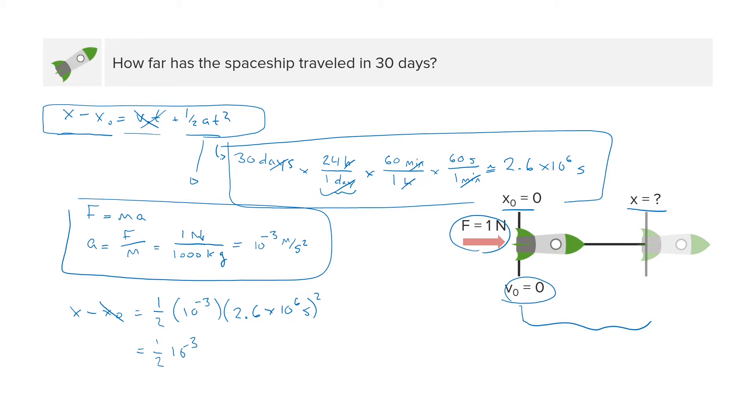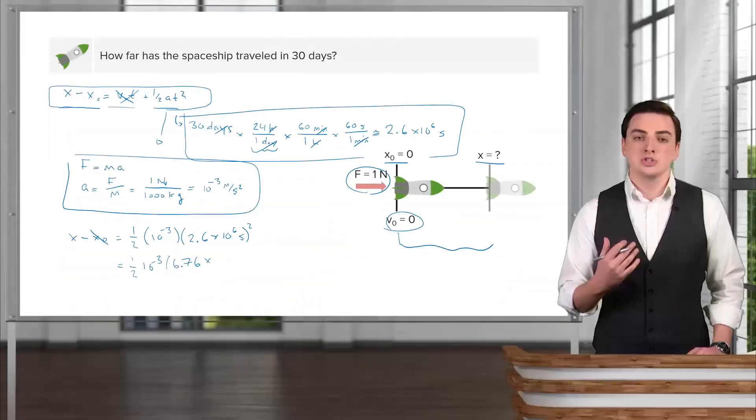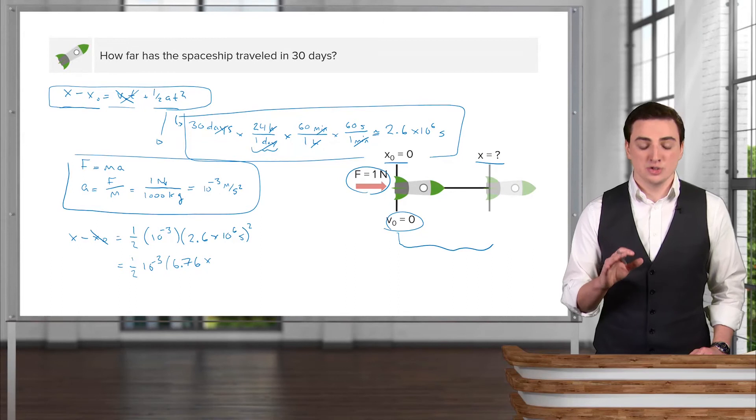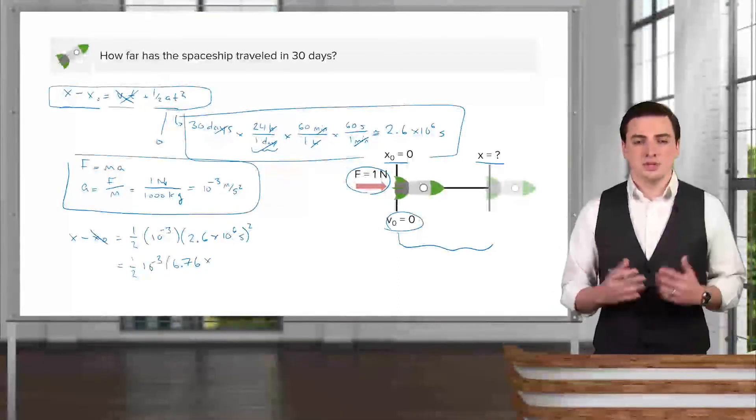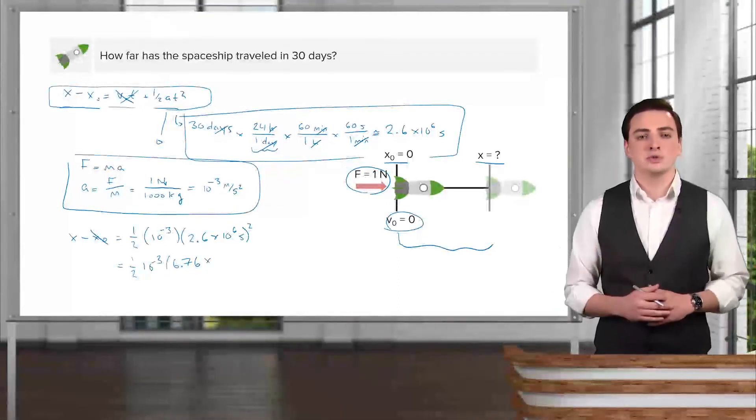is approximately 6.76. But as I've already discussed, sometimes you're going to want to just make some approximations on your own to work through a problem very quickly. So for example, in this problem, we could have taken this 2.6 and just tried to put in 3 because we know very quickly 3 squared is 9.